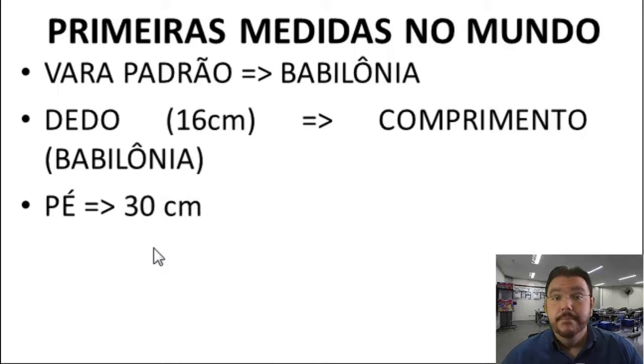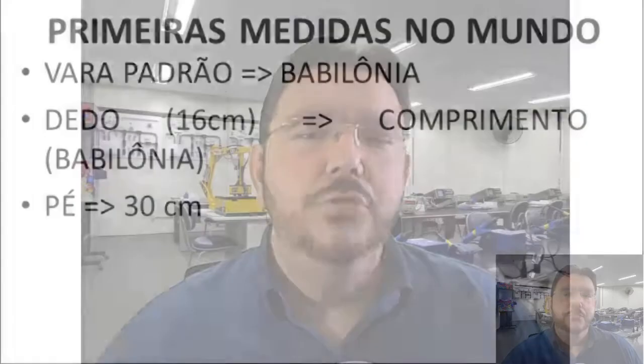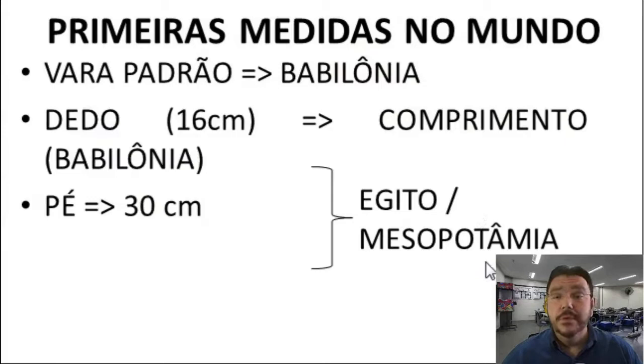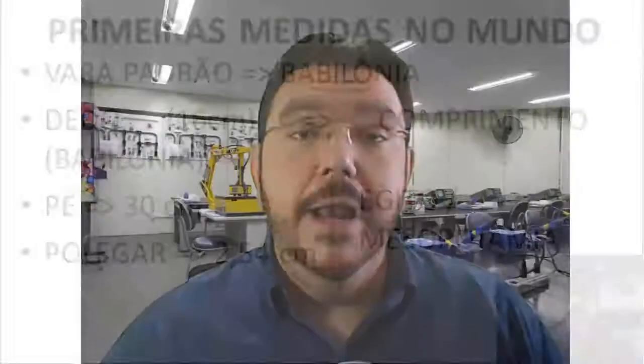O pessoal da aviação utiliza muito o pé como medida de altura — estamos a X pés de altitude. O pé surgiu no Egito e na Mesopotâmia, em épocas antes de Cristo. O polegar equivale a 2,54 centímetros, que hoje nós chamamos de polegada, e ainda é muito utilizado.